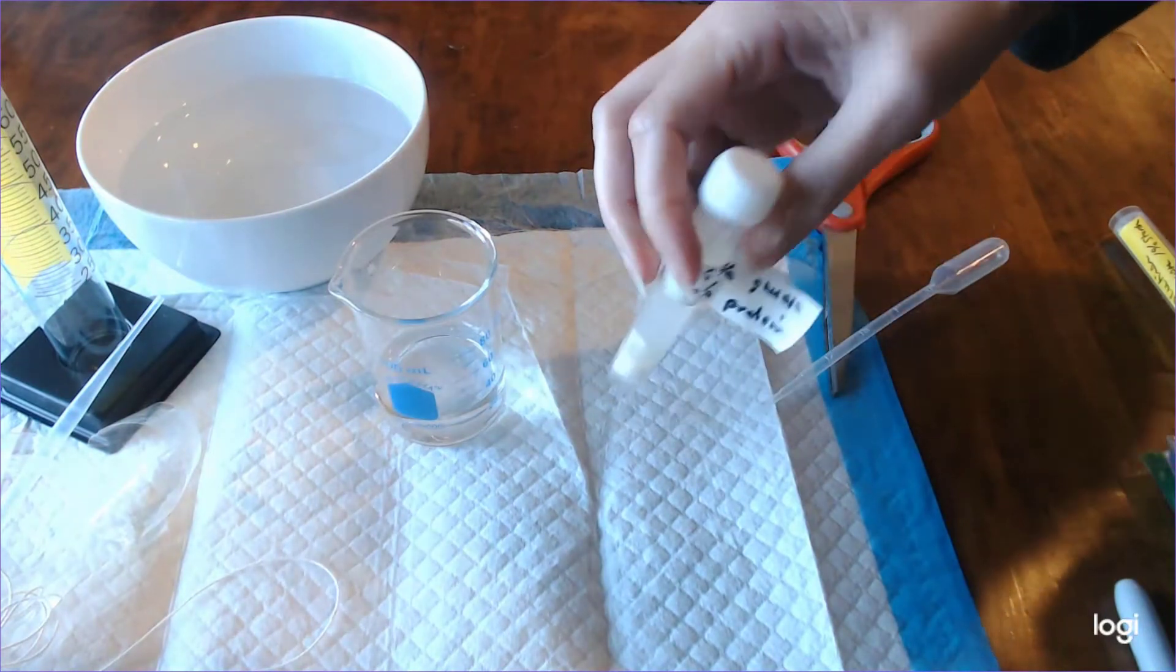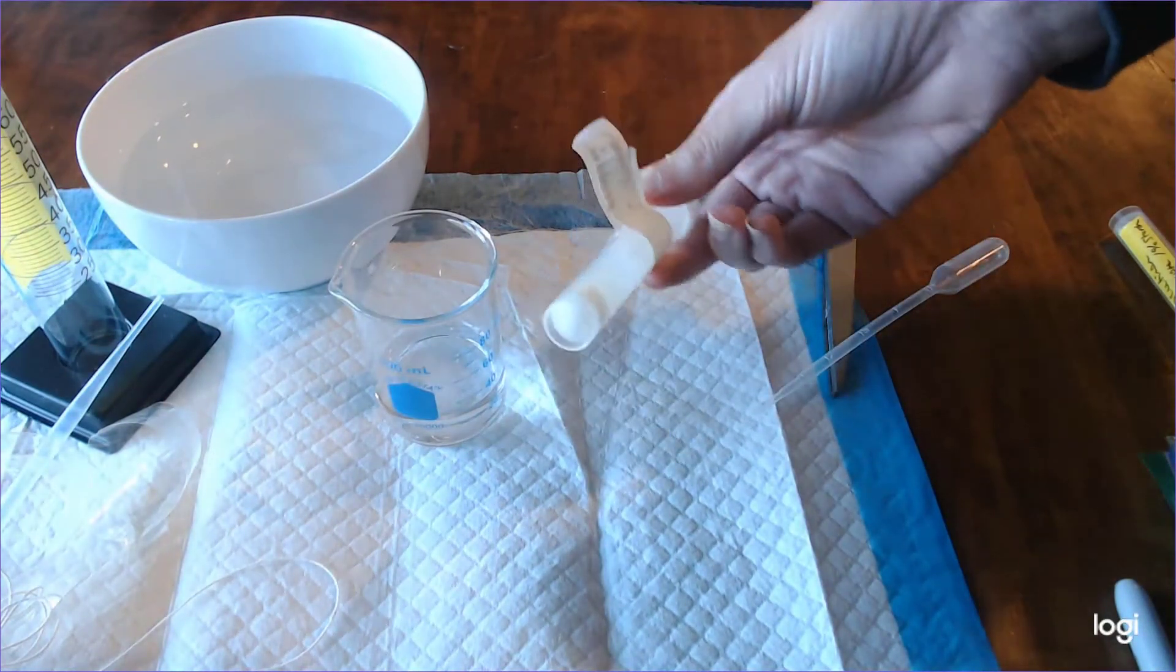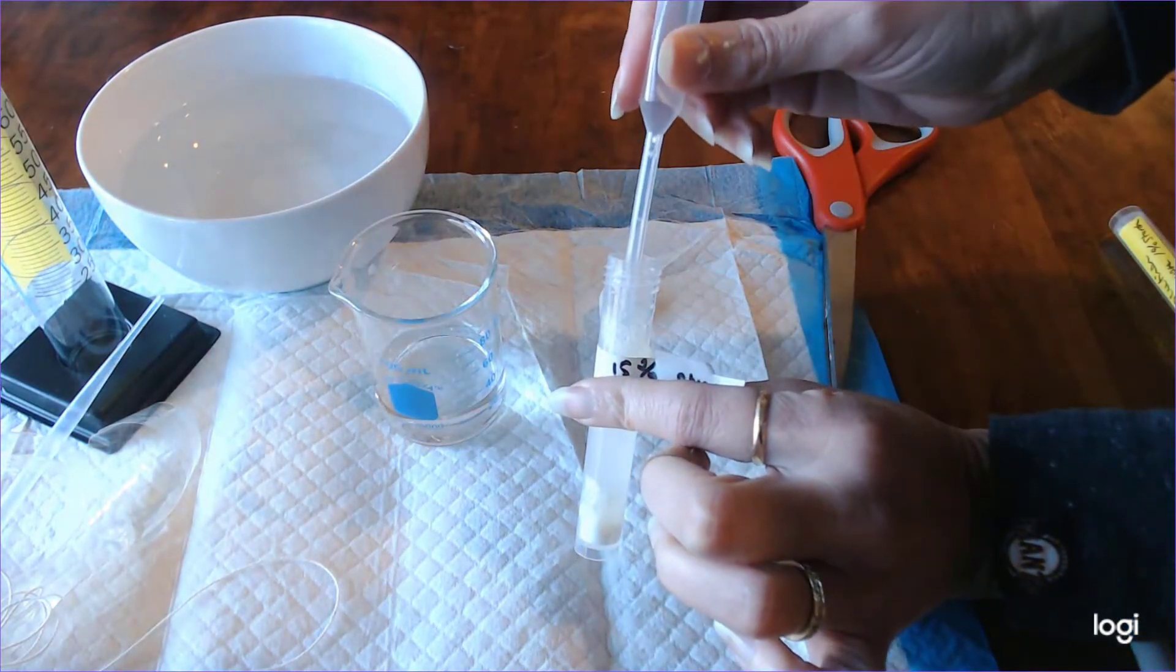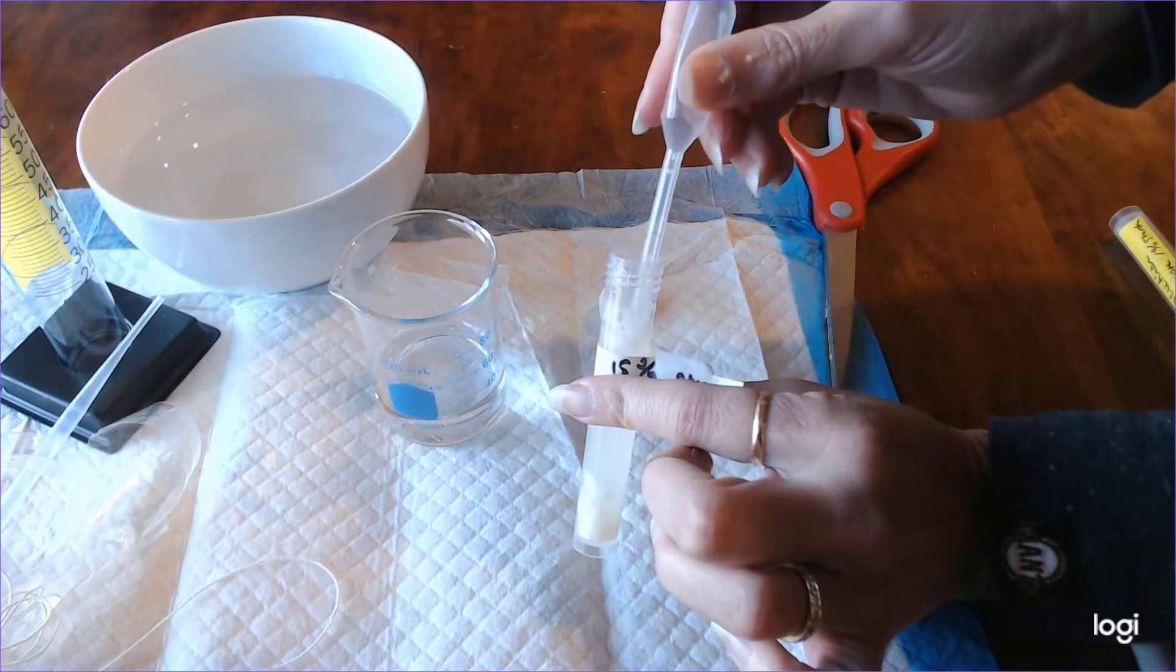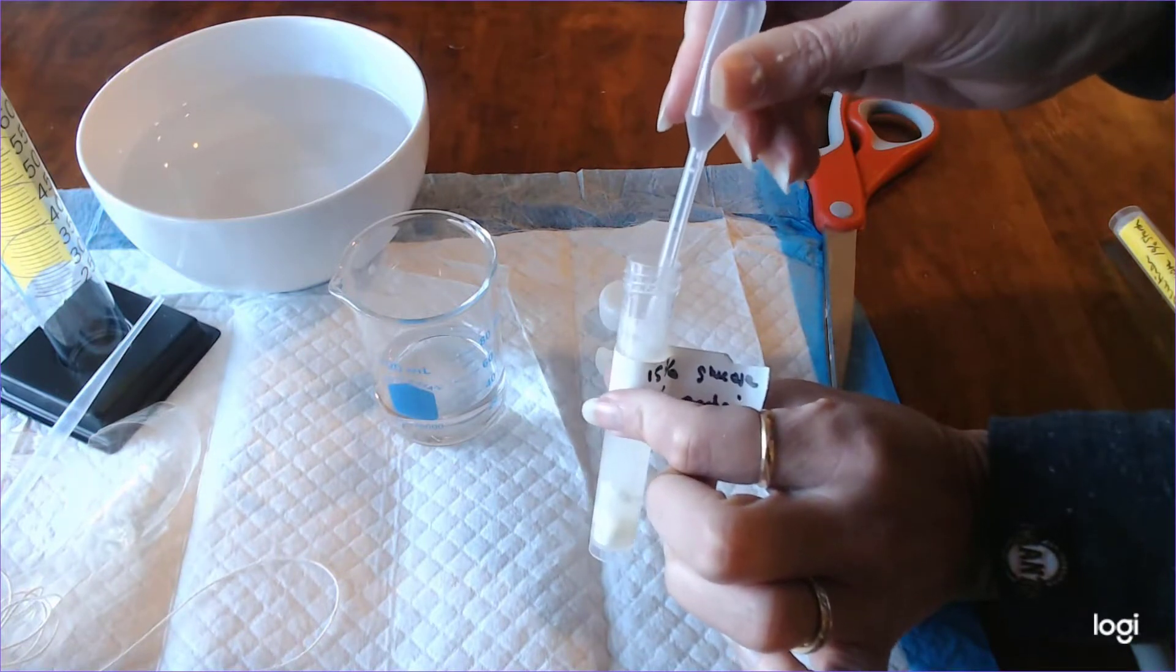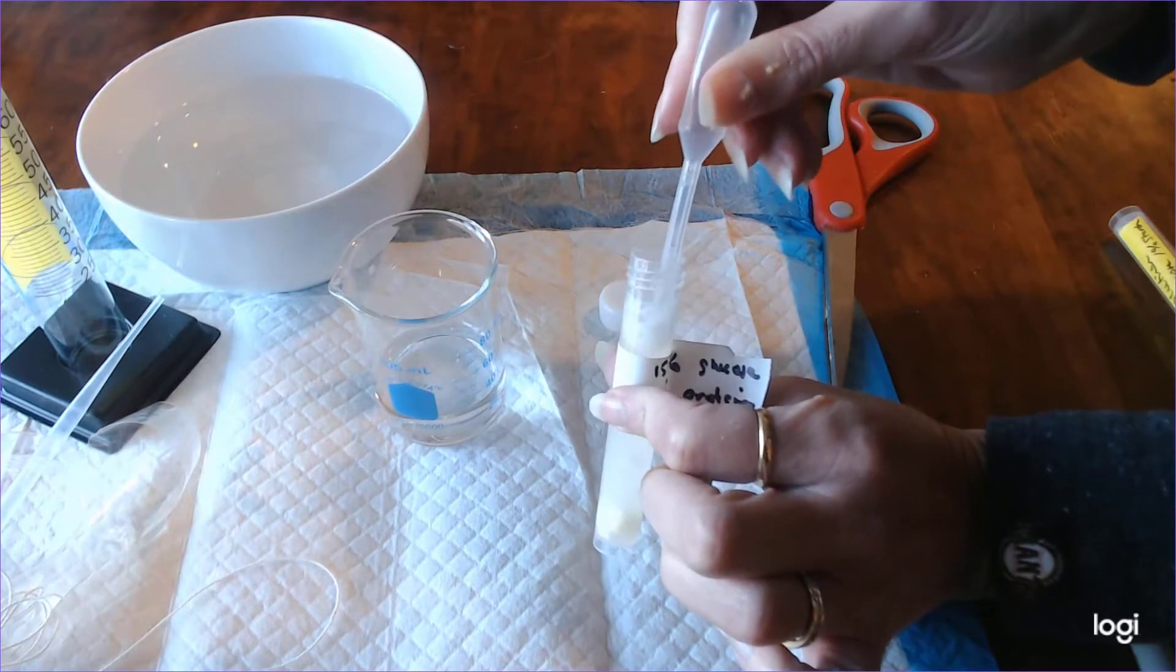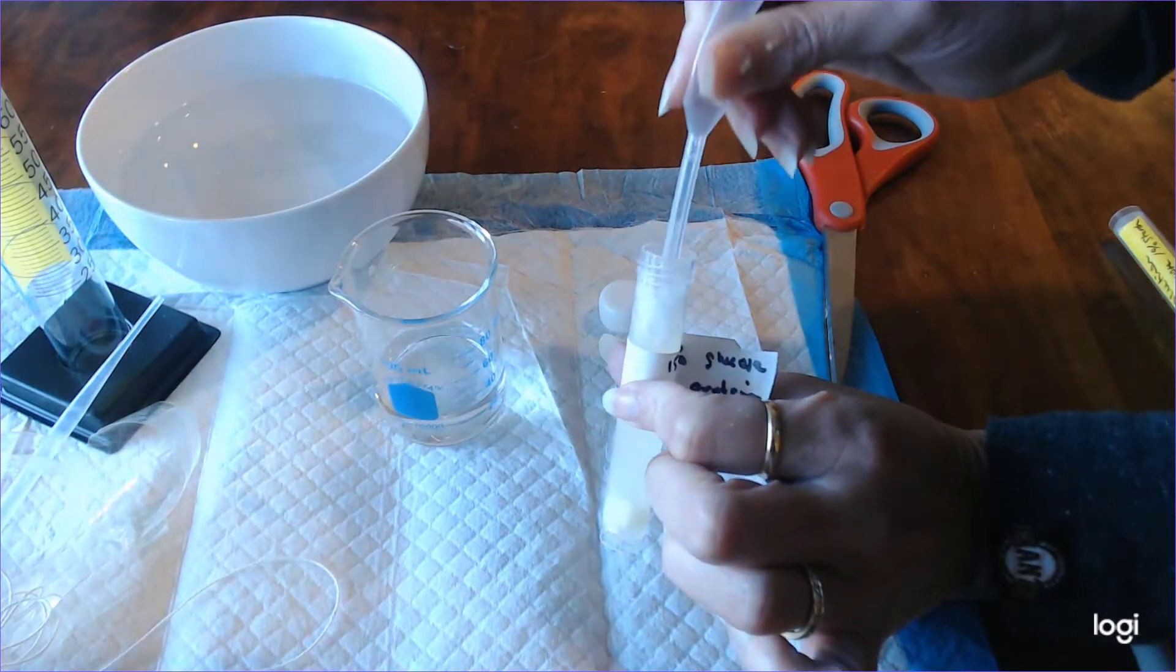So we're going to employ some tricks to help us out. The first thing that I'm going to do is use the plastic pipette that comes with the kit and kind of squeeze it to create some motion in there and hope that I can suck up some of the powder and get it to mix. That helps a little bit but it doesn't help enough.